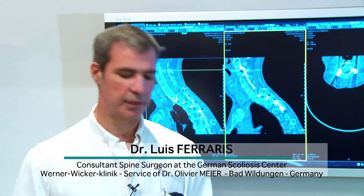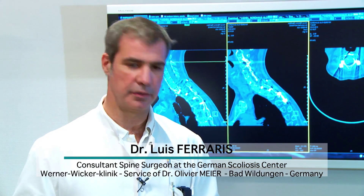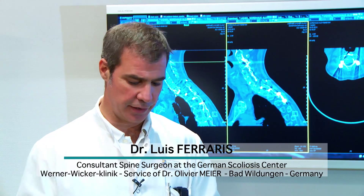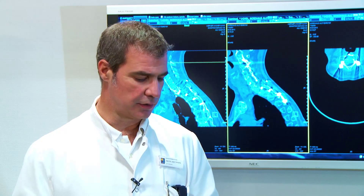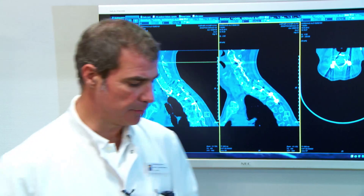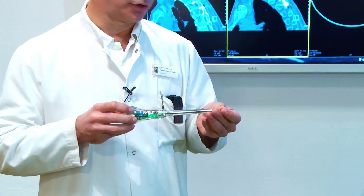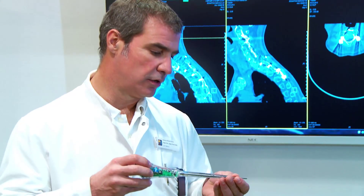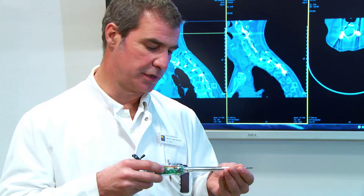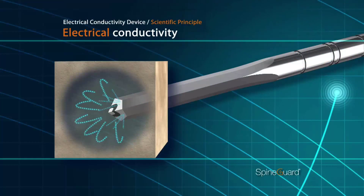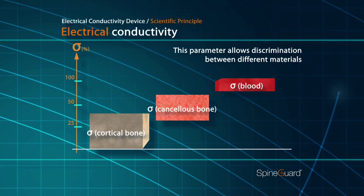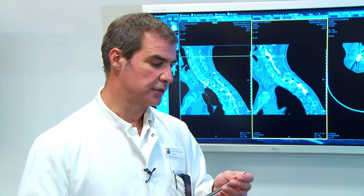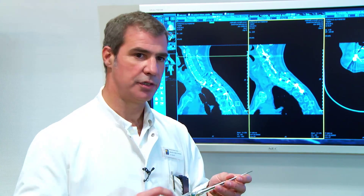The big advantage of Pedicard compared to other navigation systems is that it's very easy to use. The learning curve is quite short. You get real-time information about where you are in the bone, thanks to the conductivity system which allows you to know if you are in cortical or cancellous bone, or even if you're making a breach. The conductivity of cortical bone is not as high as cancellous bone, and even higher is the conductivity of fluids. That's why we have the beep tone coming from the Pedicard.